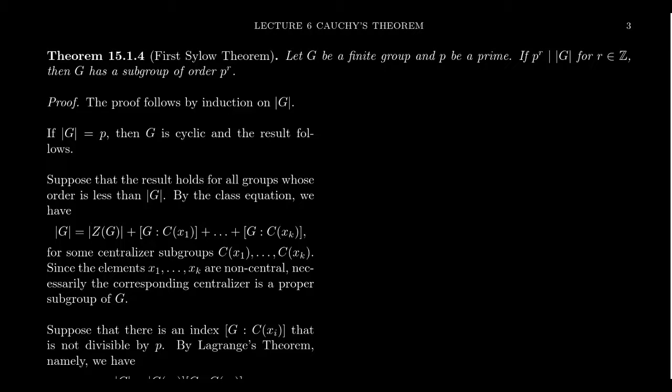Sylow's first theorem generalizes that. So if P squared divides the order of the group, you have a subgroup of order P squared. If P cubed divides the order of the group, you have a subgroup of order P cubed. If P to the fourth divides the order of the group, then there's a subgroup of order P to the fourth. That's what the first Sylow theorem gives us — we're generalizing Cauchy's theorem.